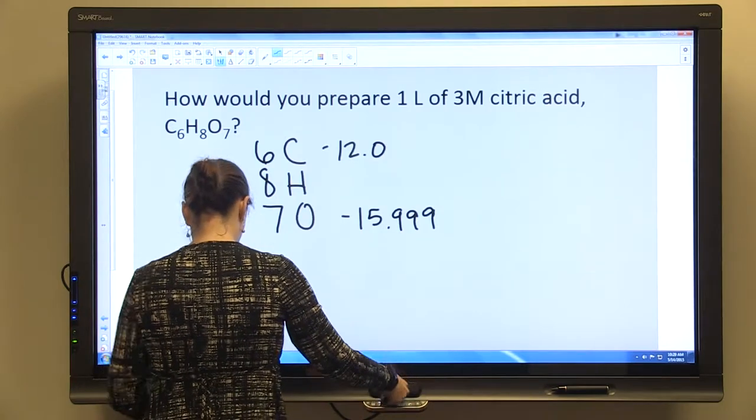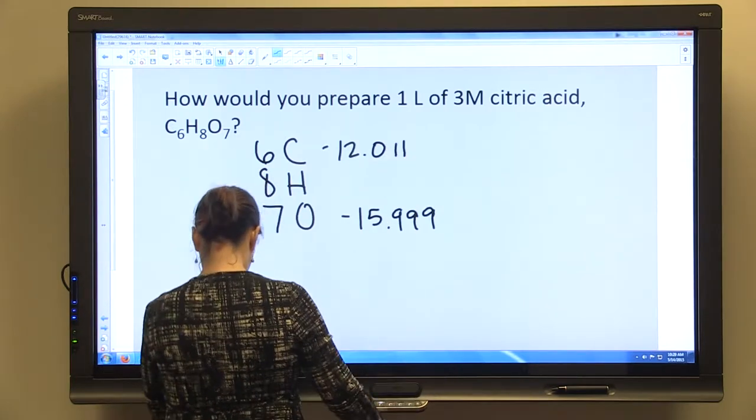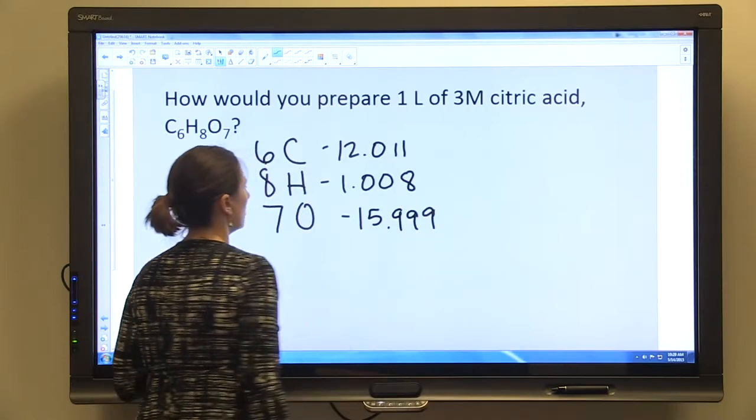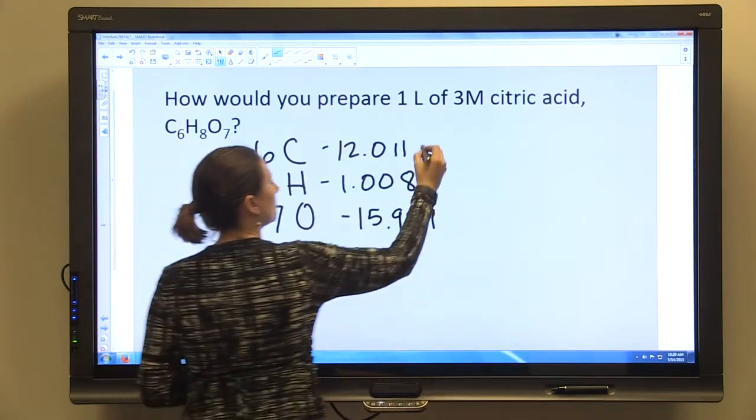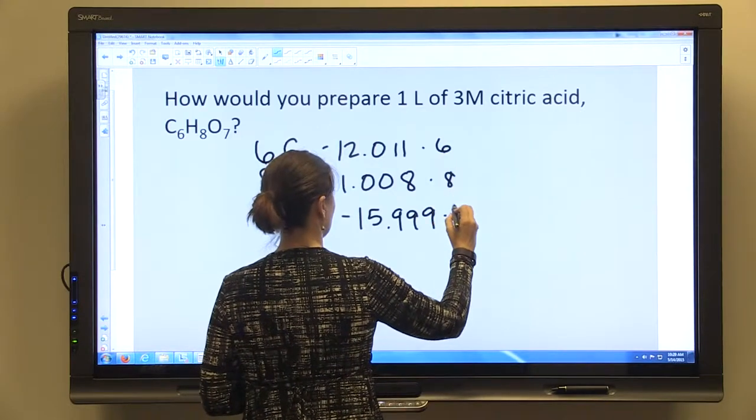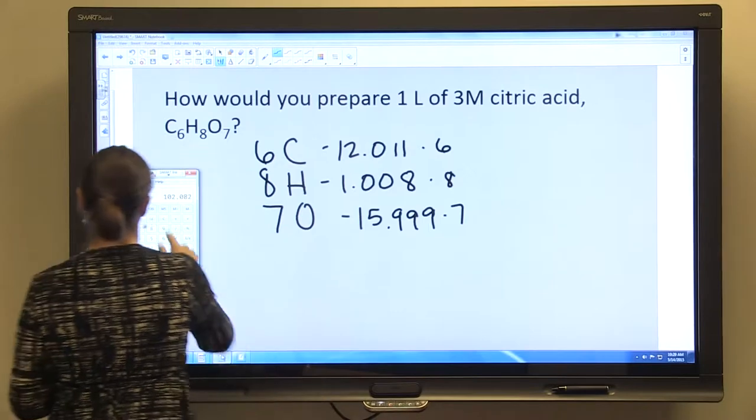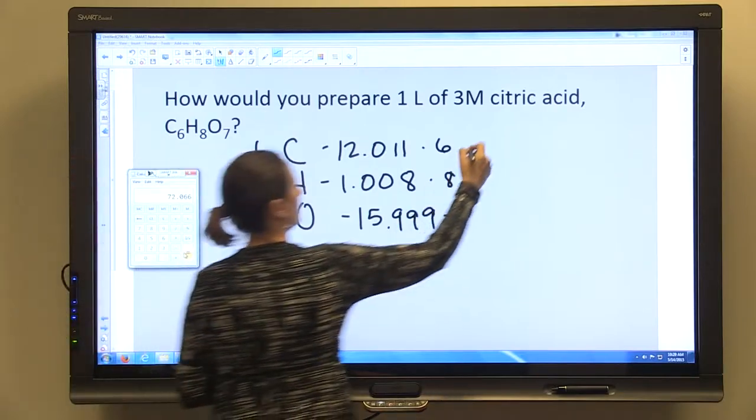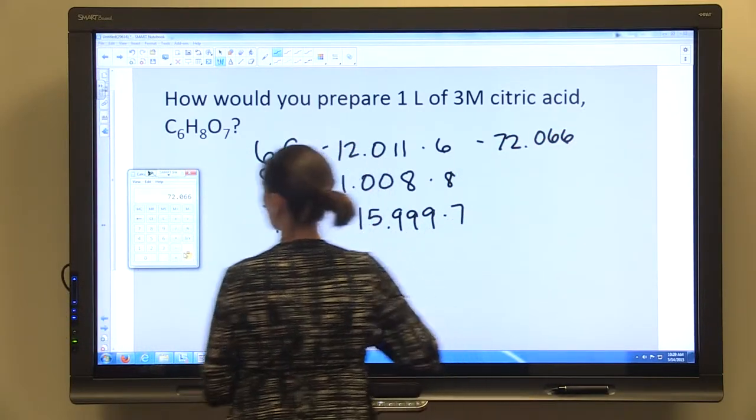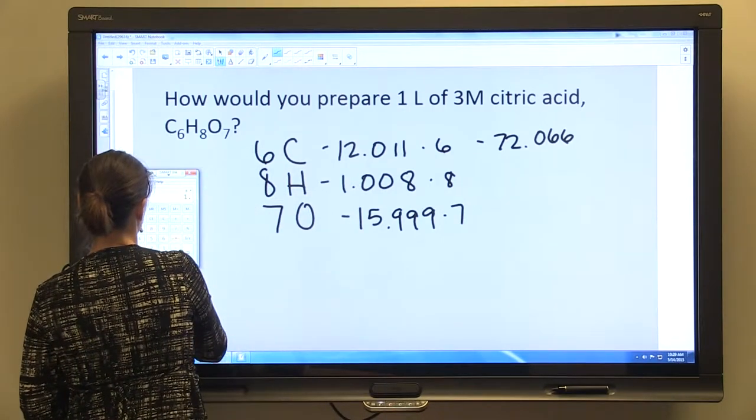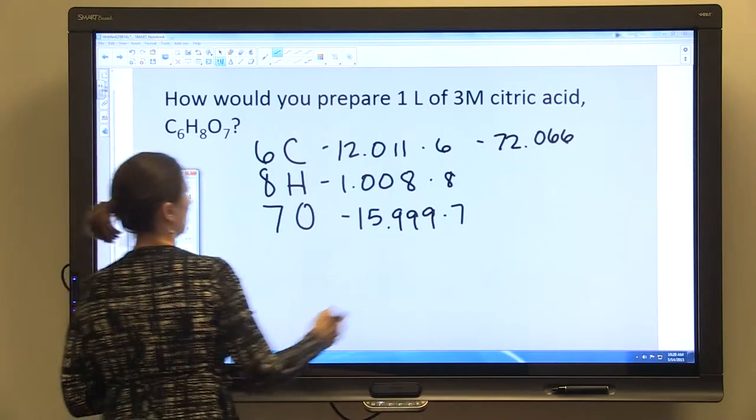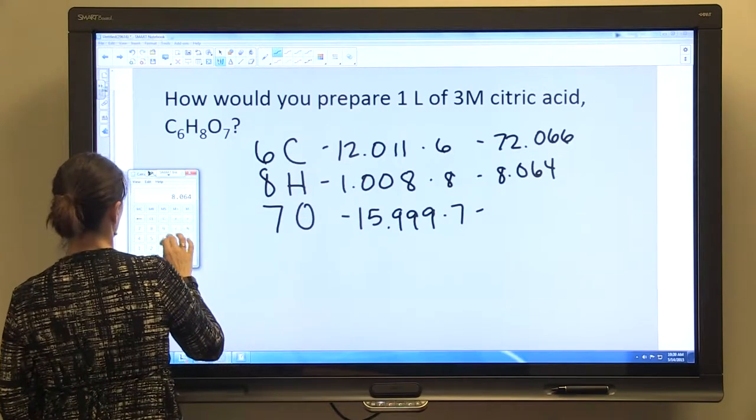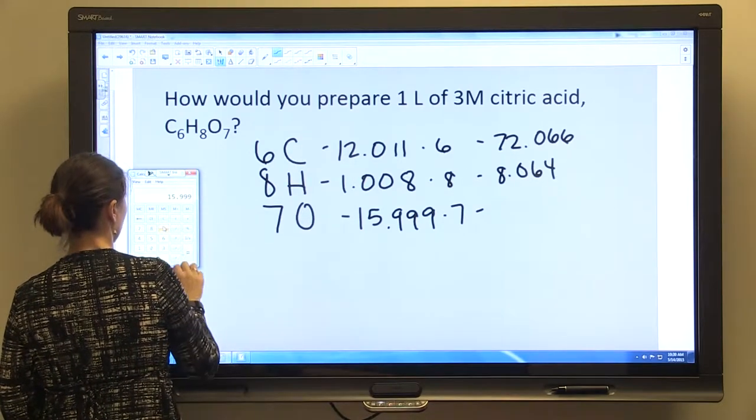So we're going to have to multiply this times 6, this times 8, and this times 7. So 12.011 times 6 is 72.066. That's 8 times 1.008, which is 8.064.